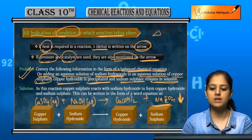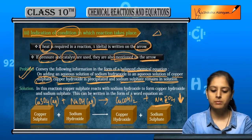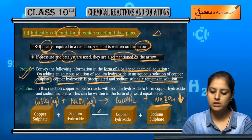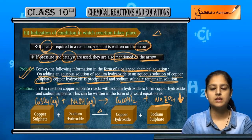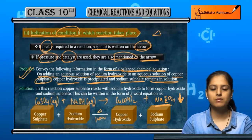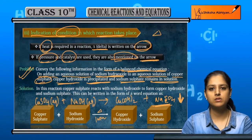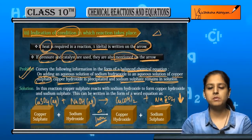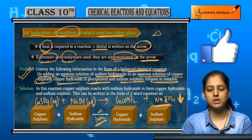By writing the state, or if there is heat required, then we put delta on it. Or if we put pressure on it, then we write one atmosphere, or two atmosphere, or 300, whatever. Then we show it. So this was about making the equations informative. We will move on to the types of chemical reactions.